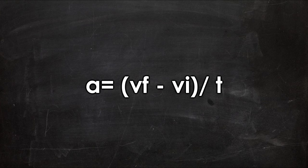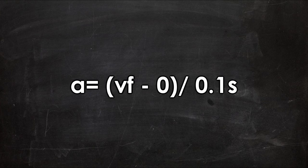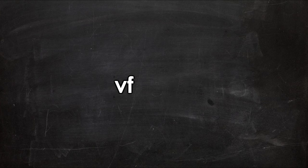We can calculate acceleration using change of velocity over t, and we know that the initial velocity is zero since a jump starts at rest, and we know that t equals 0.1 seconds, since we estimated that earlier, but we don't know final velocity.